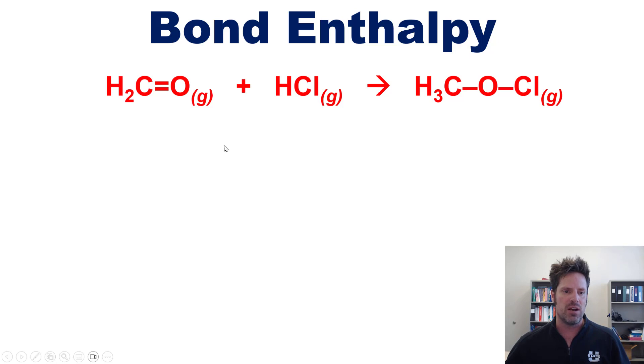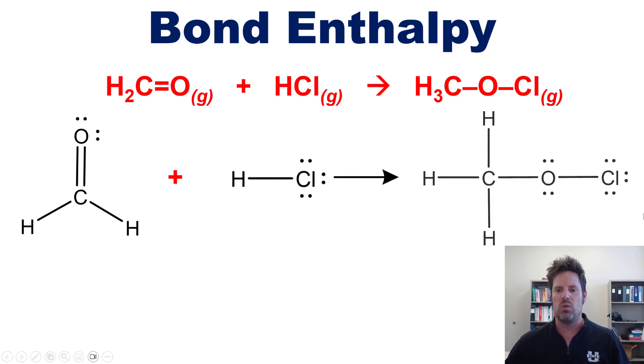The Lewis structure for this molecule right here, formaldehyde, happens to be this, for this molecule HCl is this one right here, and the Lewis structure for this product over here is the one shown right here.